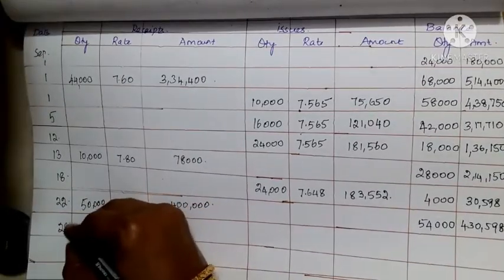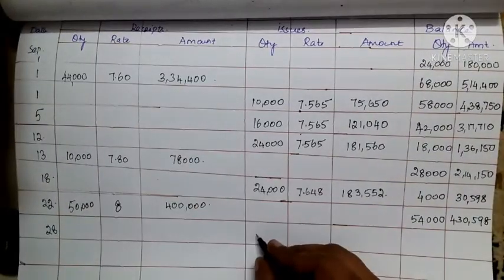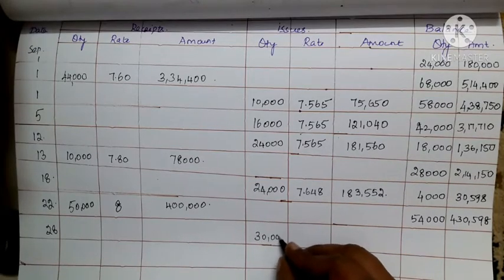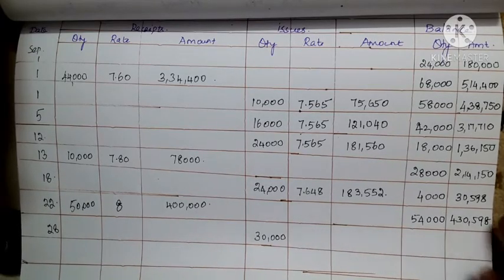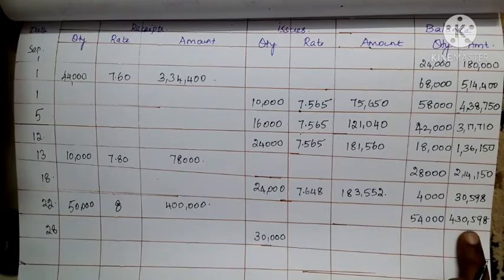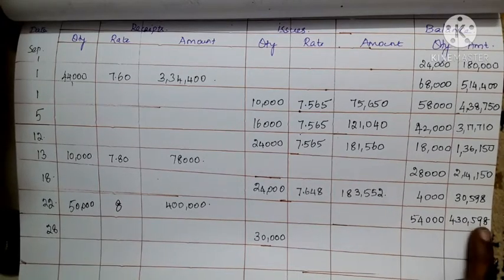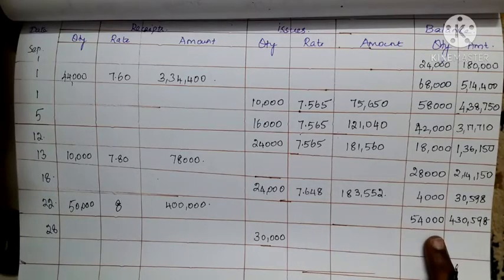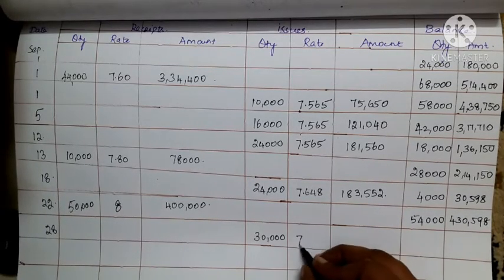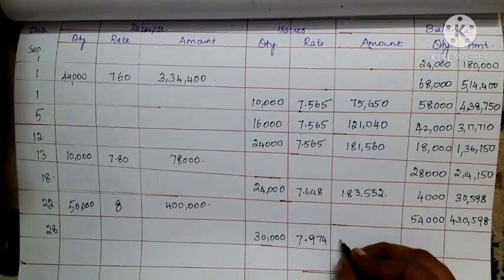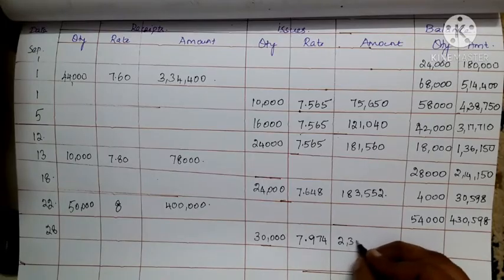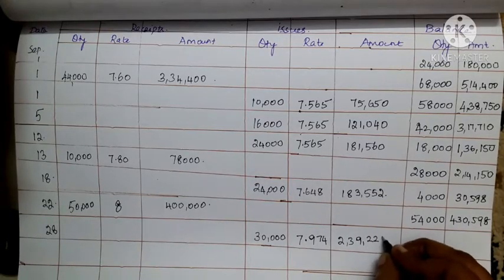Date 28: issue is 30,000 kg. Divide the balance amount 4,30,598 by the balance quantity 54,000. The rate is 7.974. Multiply 30,000 by 7.974 to get 2,39,220.